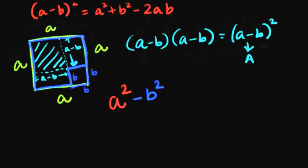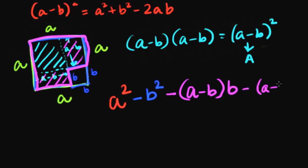Let me take another color so that you can observe carefully. I have to remove this area and this area. So this is minus a minus b into b, which is one rectangle, and similarly a minus b into b, which is another rectangle.